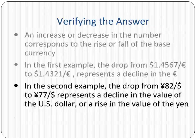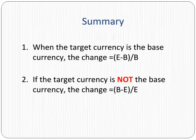In the second example, the drop from 82 yen per dollar to 77 yen per dollar represents a decline in the value of the US dollar, or a rise in the value of the yen.